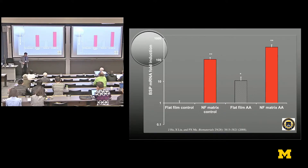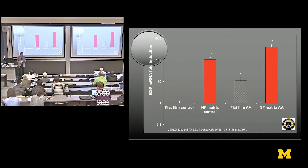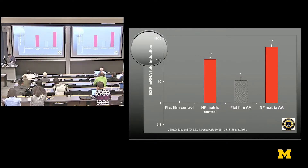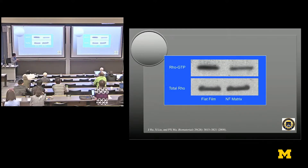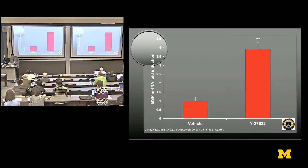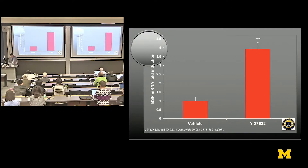The first time we got that data, the student said he must have done something wrong and repeated the study. The second time it was again 100 times — he said he must have done something wrong again. The third time, he said maybe it wasn't wrong. We then found truly that nanofibers can affect gene expression. Follow-up studies found some mechanism related to a ROCK signaling pathway, and recently related to a YAP pathway as well. We proved those pathways were true using inhibitors that could rescue the gene expression.